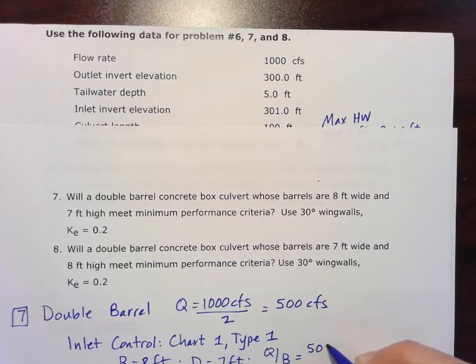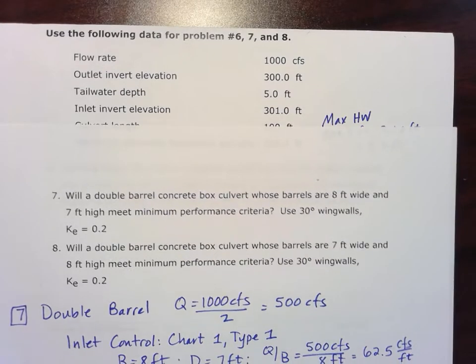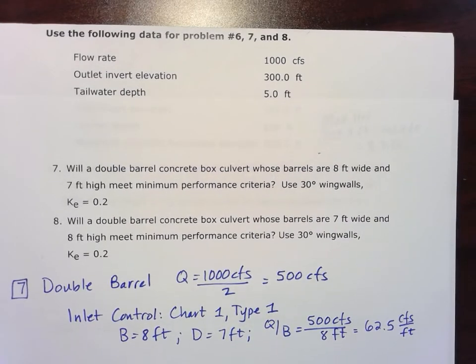And then we'll also need a Q over B for that middle vertical line there. And so that's going to be the 500 CFS over the 8 feet, and so that's going to give us about 62.5 cubic feet per second per foot. So we'll need to use that on our chart as well.